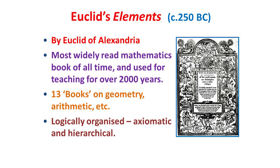The Elements is logically organised, starting with some definitions and some basic assumed facts which we take as a starting point. From these, simple results are proved, and then based on these, some harder ones, then still harder ones, until a whole hierarchy of results emerges, with every new result based on earlier ones. On the right you can see the first English language edition of the Elements, produced in 1570 by Henry Billingsley, later a Lord Mayor of London.